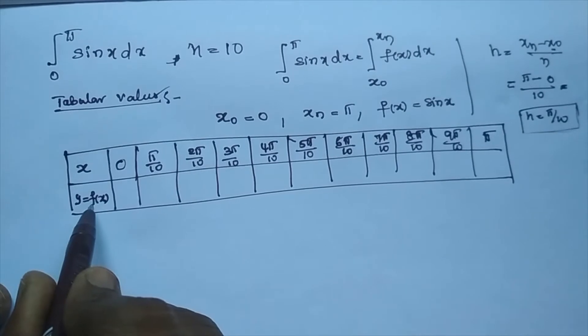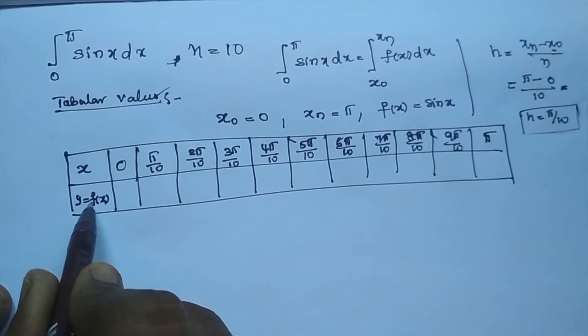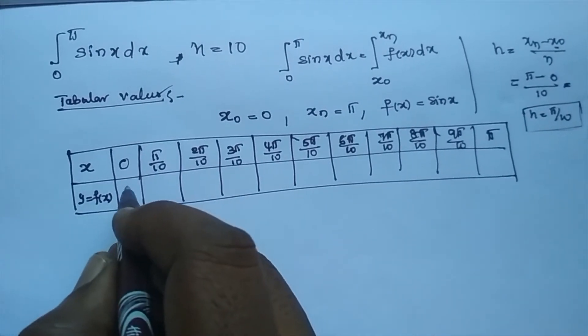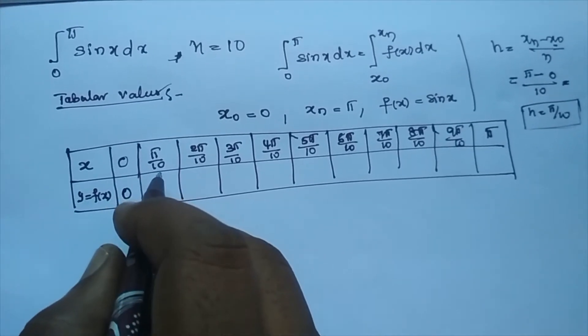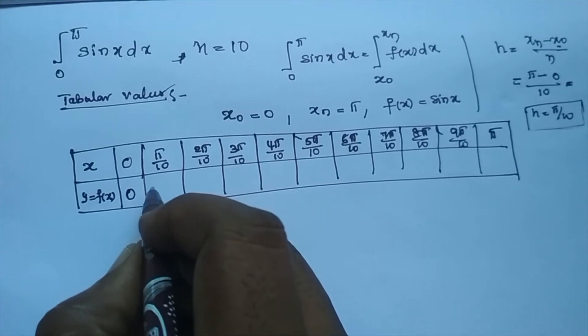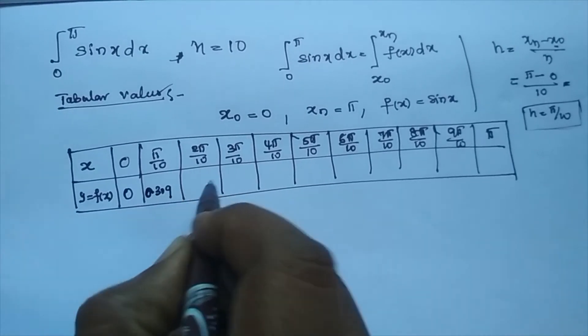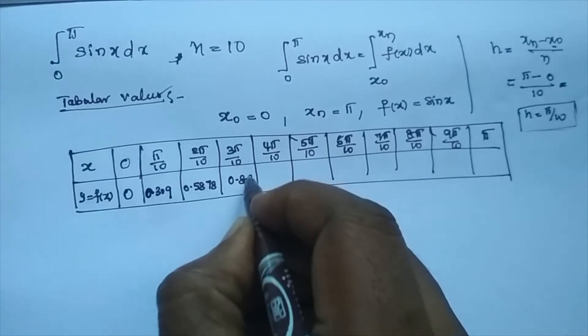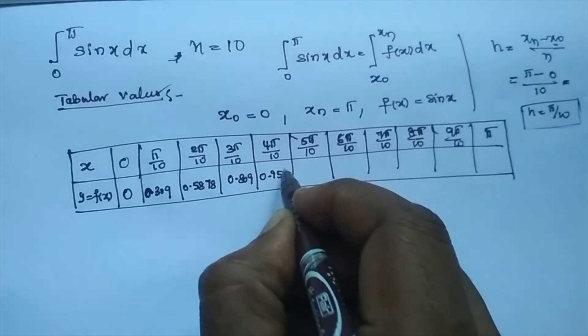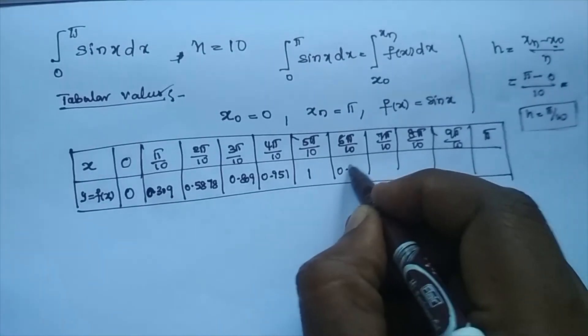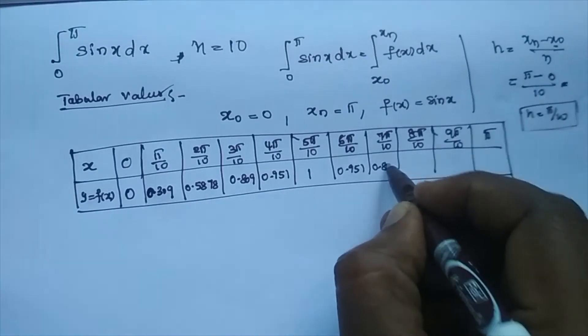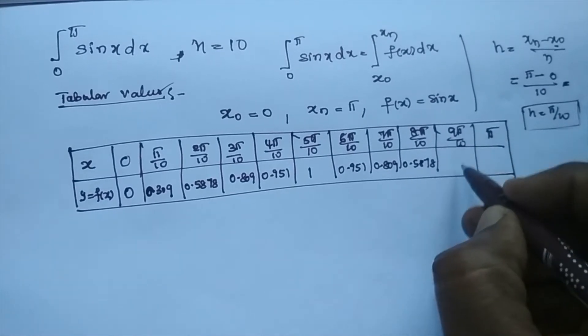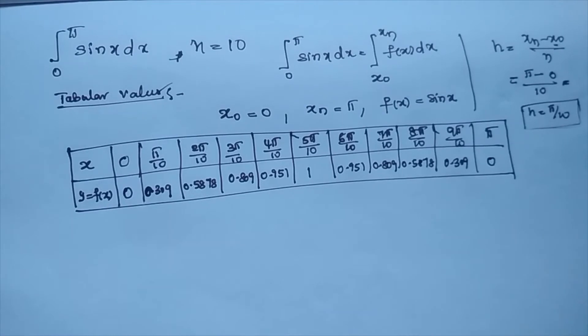Then corresponding y values. Suppose f of x is equal to sin x. You can substitute x as 0, that is 0. And then sin of pi by 10, take calculators and find out this value: 0.309, 0.5878, 0.809, 0.951, and this is 1, 0.951, 0.809, 0.5878, 0.309, and sin pi is always 0.